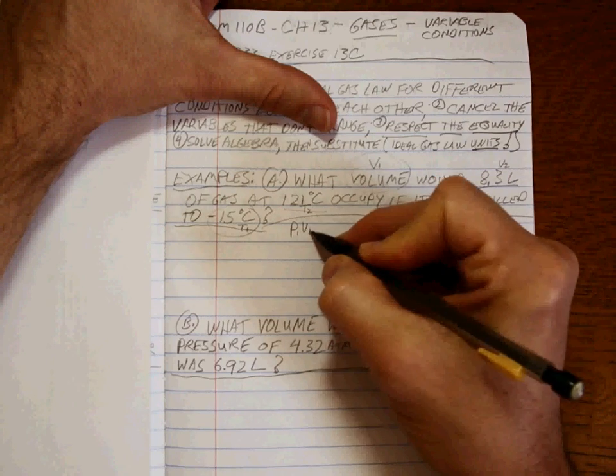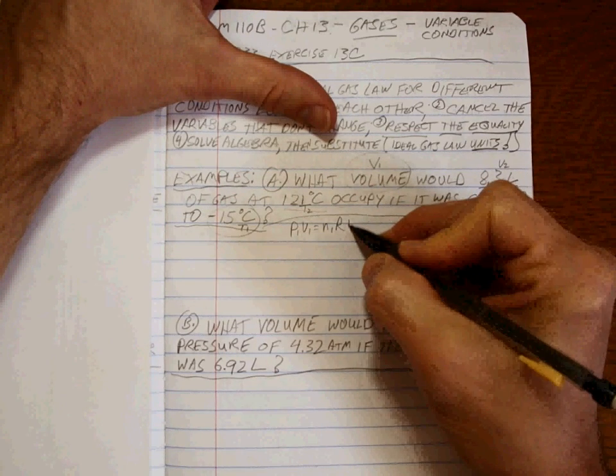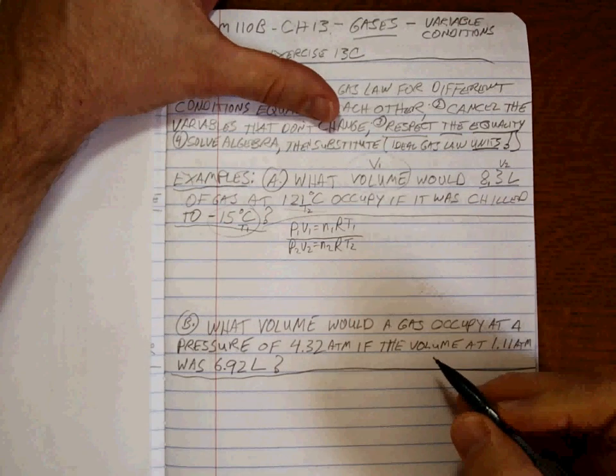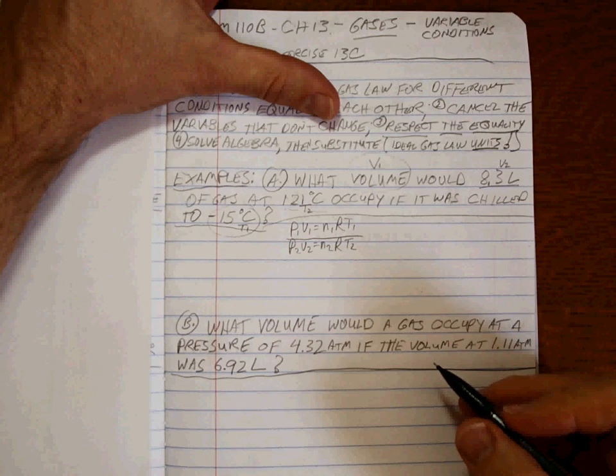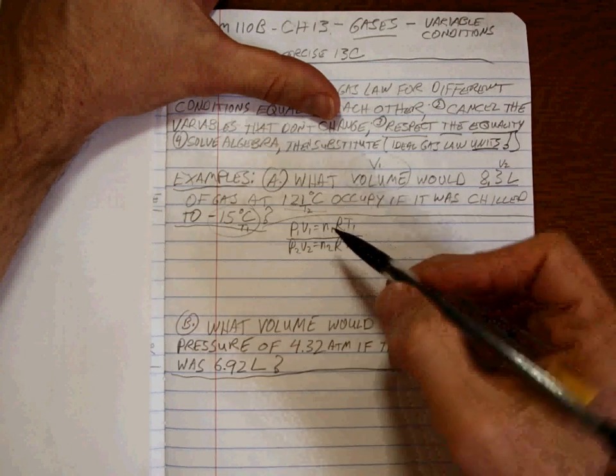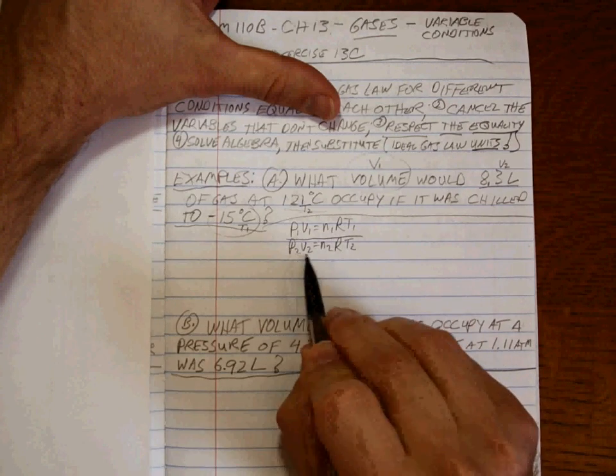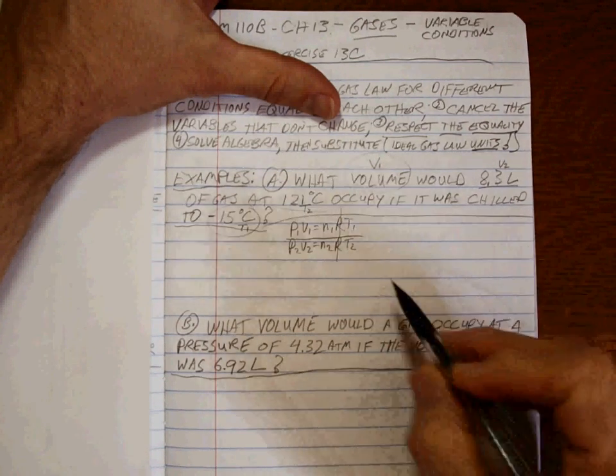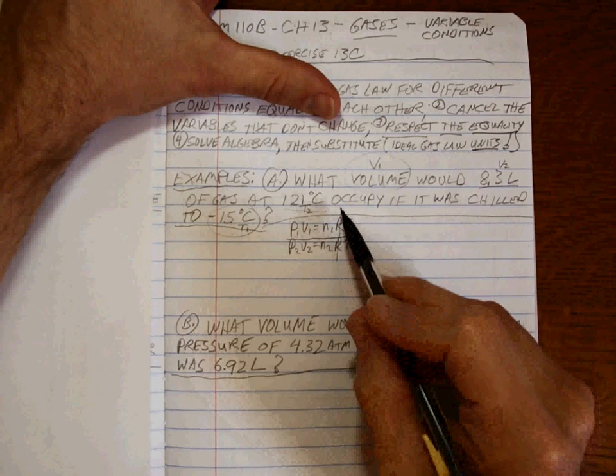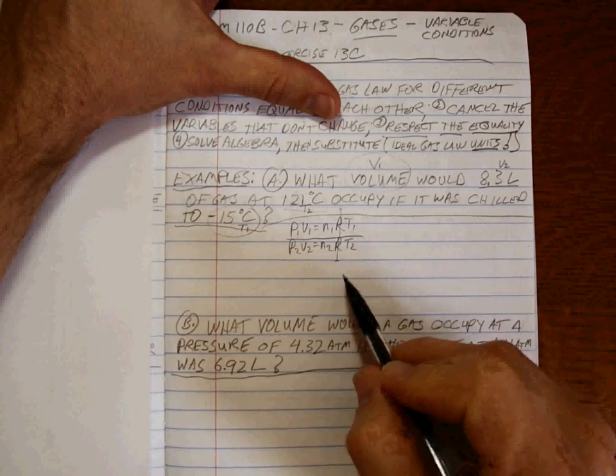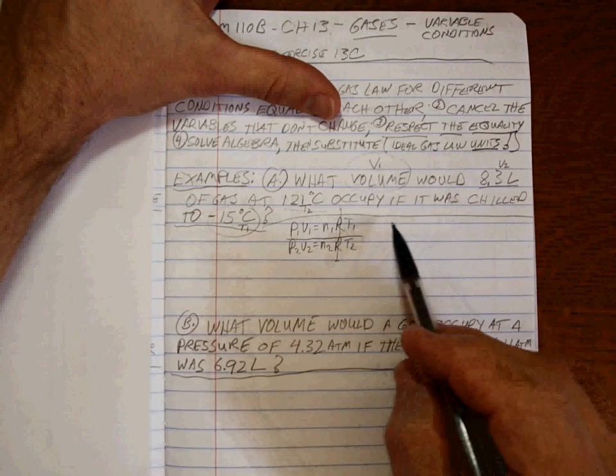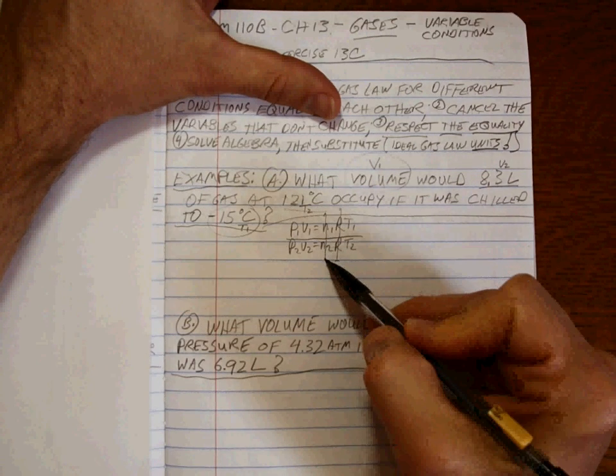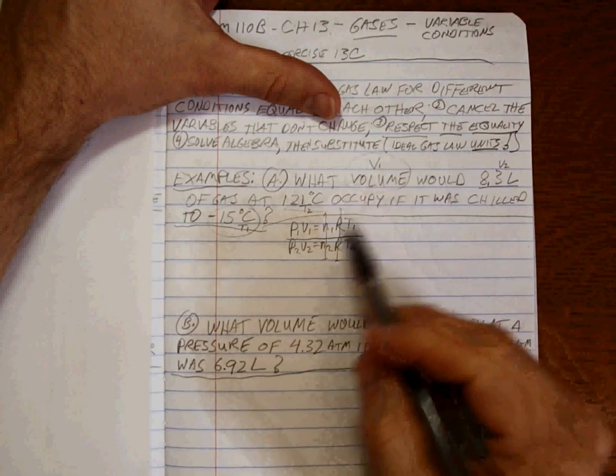Once you do that, the rest of the problem is really not that bad. So P1V1 is equal to N1RT1 over P2V2 is equal to N2RT2. So what things can we cancel out because we know they're the same, that they're not changing? Well, 1 is all the first set of conditions. 2 is all the second set of conditions. R doesn't have a 1 or 2 because R is equal to R. So 0.08206 divided by 0.08206 is 1. This looks like a great big 1, so it cancels out. What else cancels out? Did the problem say anything about adding or leaking out any of the gas from the balloon? No. So the moles don't change. They cancel out.